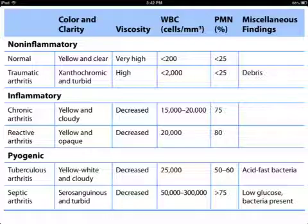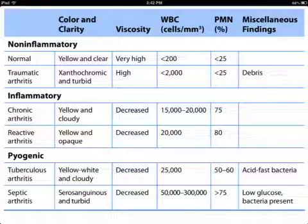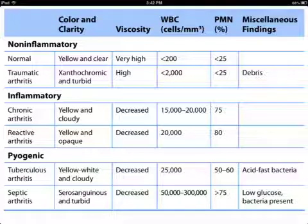Normal synovial fluid appears yellow and clear, with very high viscosity. WBC cells are less than 200 — very important. If the history says a baby was brought to the ER or your office for joint pain evaluation and the WBC is 180 or 150, remember: less than 200 is normal. PMN is less than 25.